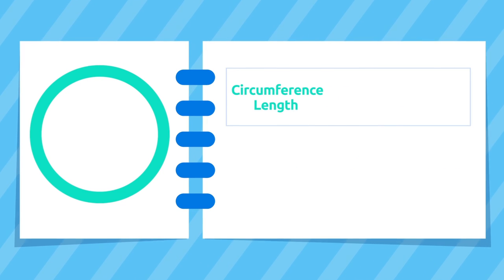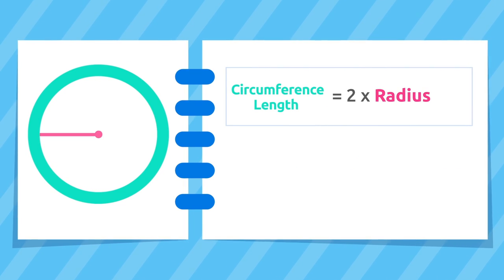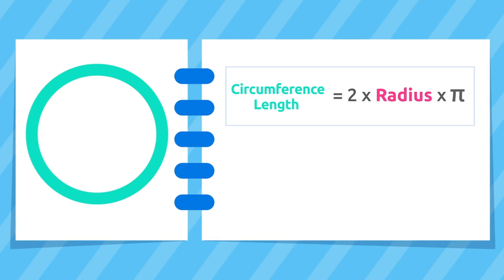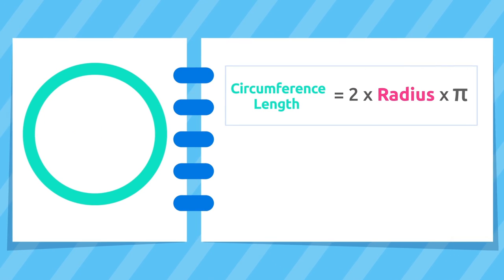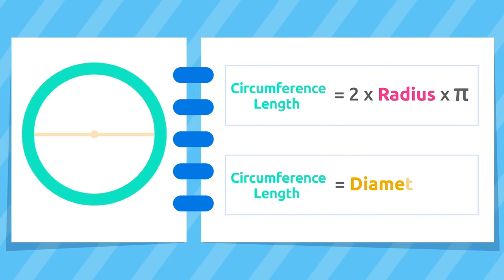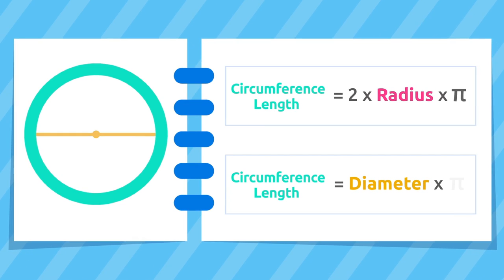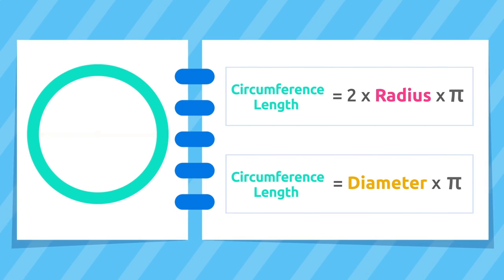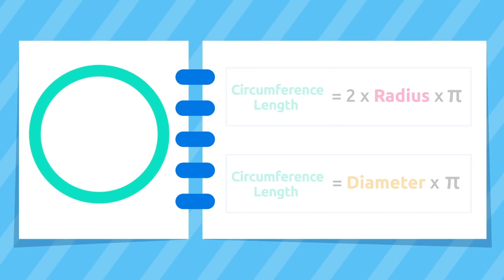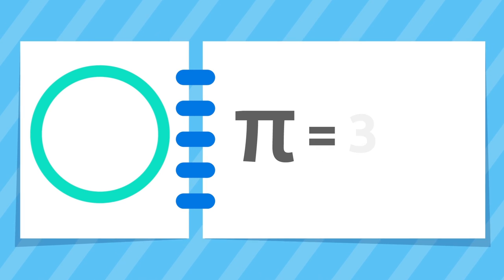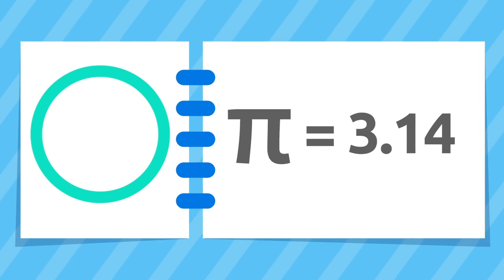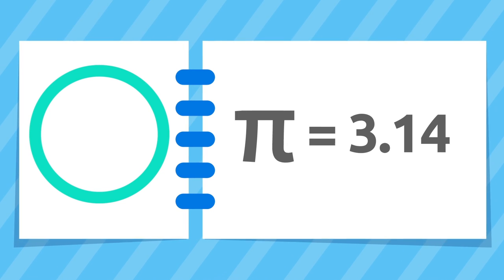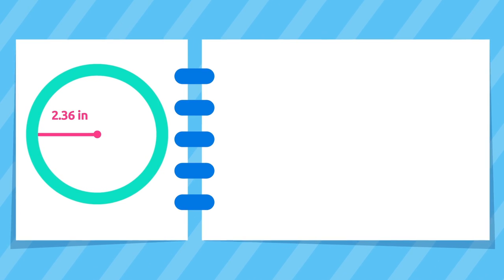The length of the circumference equals twice the radius multiplied by pi — or in other words the diameter of the circumference multiplied by pi. Remember that pi is 3.14 — we always use this number. Let's look at some examples: this circumference has a radius of 2.36 inches.